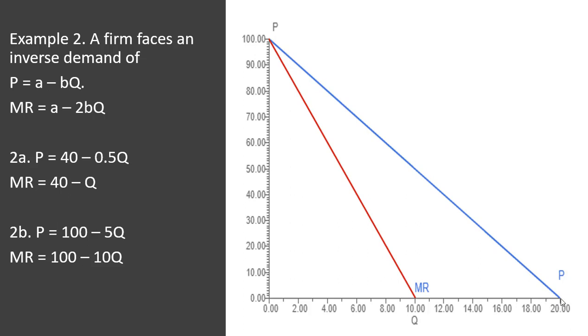Notice when Q is 20, the price would be 0, 100 minus 5 times 20, the price is 0. So this is indeed what the demand curve looks like.